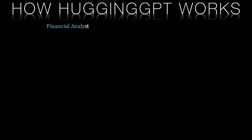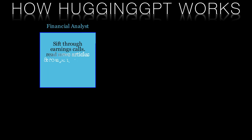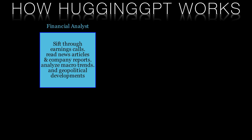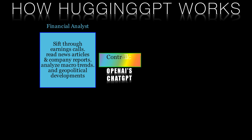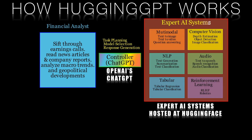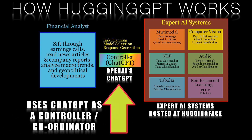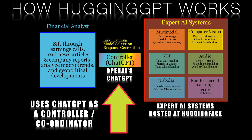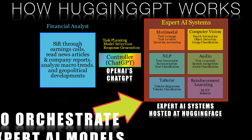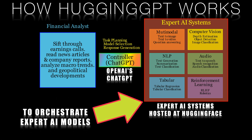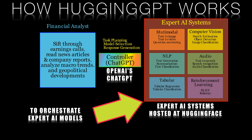HuggingGPT is a groundbreaking framework that leverages large language models like ChatGPT to connect and collaborate with various expert AI models available in the Hugging Face Library. HuggingGPT is also called Microsoft Jarvis, and it uses ChatGPT as a controller to manage and coordinate expert AI models to solve complicated tasks.